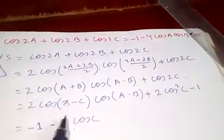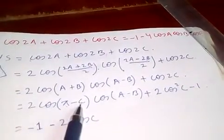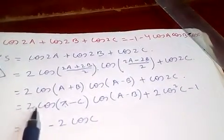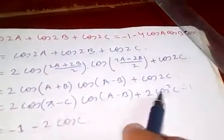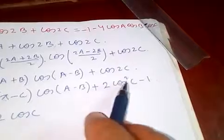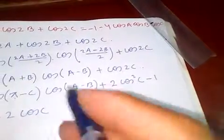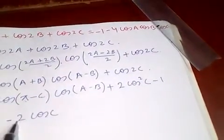So we get minus 2cosC·cos((A-B)/2) + cos2C. Let's take out the common factor and continue simplifying.